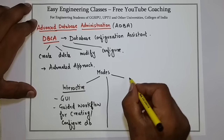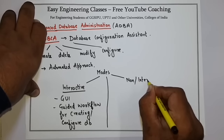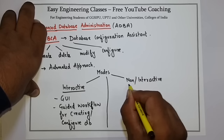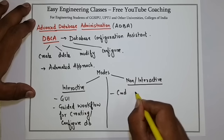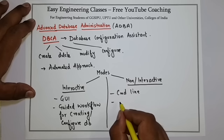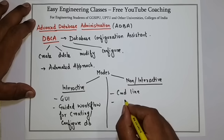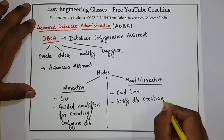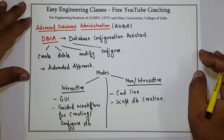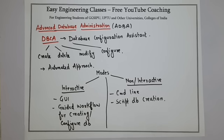The second approach of using DBCA is non-interactive. It is a command-line approach where the system admin or database admin writes scripts to perform database creation or other operations. This is a brief overview of DBCA — Database Configuration Assistant. DBCA can be used for creating, deleting, modifying, and configuring a database, and there are two different modes: interactive and non-interactive. Thank you for watching the video.